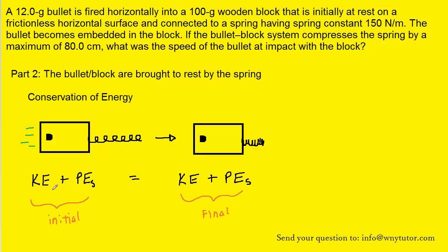On the initial side of the equation, we're going to see two forms of energy as well as on the final side. The block and the bullet are moving initially, so we're going to have some kinetic energy. Also, because there's a spring present, we have to incorporate the potential energy of the spring. The bullet and block are not moving upward or downward, so we do not have to concern ourselves in this problem with any gravitational potential energy.